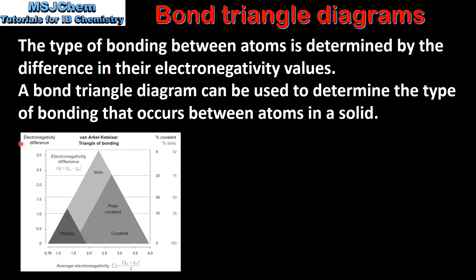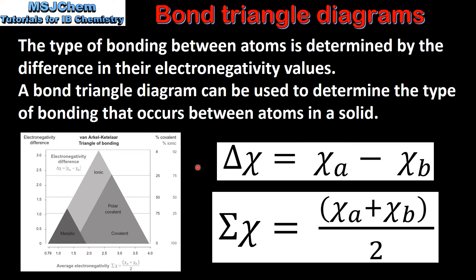Here we have the bond triangle diagram that appears in the data booklet. In addition to this diagram there are also these two equations. The first equation is used to calculate the difference in electronegativity between two atoms. The second equation is used to determine the average electronegativity.